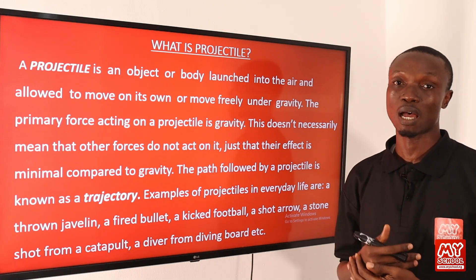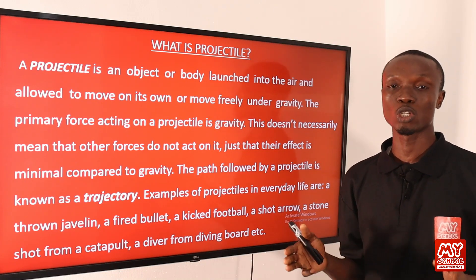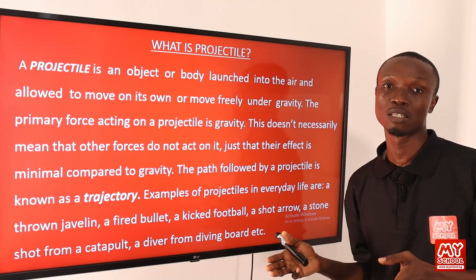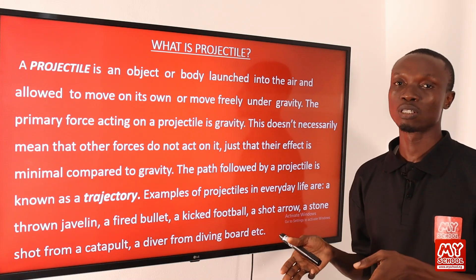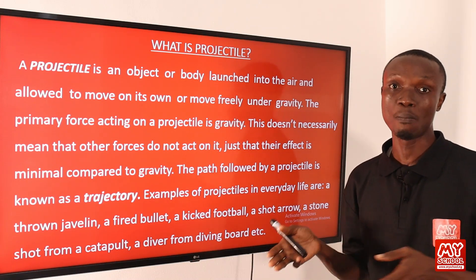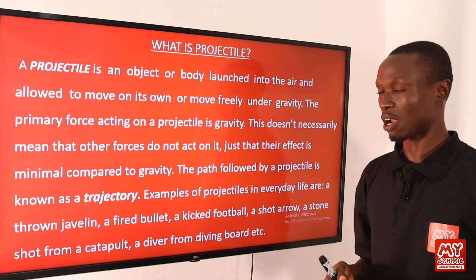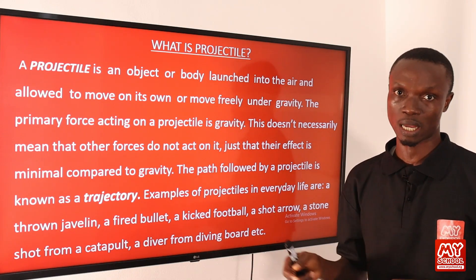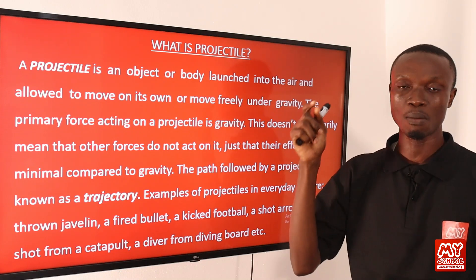The primary force acting on a projectile is gravity. This does not necessarily mean that there are no other forces acting on the object, but the effect of other forces are minimal compared to that of gravity. The path followed by a projectile when it is launched into the air is referred to as its trajectory.